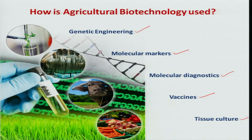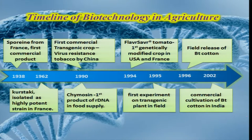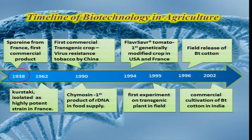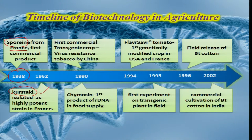Let us look at the milestones in the history of biotechnology from a pest management perspective. In 1938, after the discovery of BT, commercialization started with the first commercial BT product produced in France, and BT received clearance from the Environmental Protection Act. Then in 1962, BT variety Kurstaki became highly popular and was mainly used for commercialization.